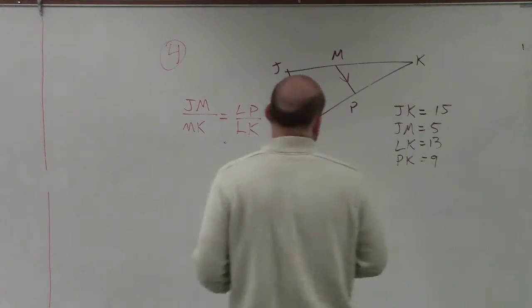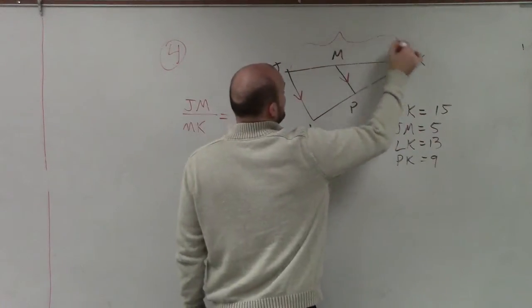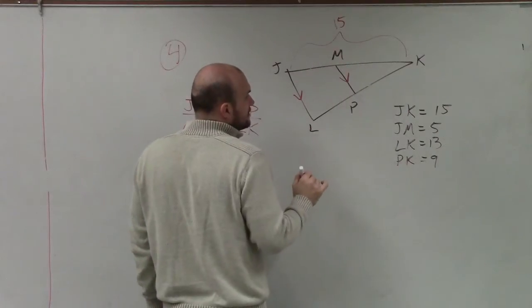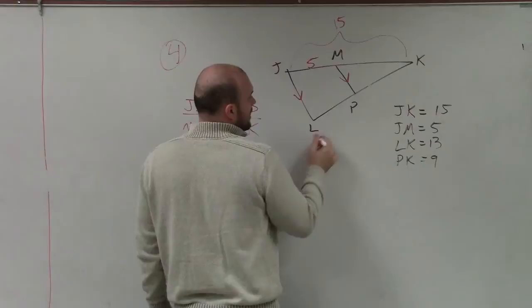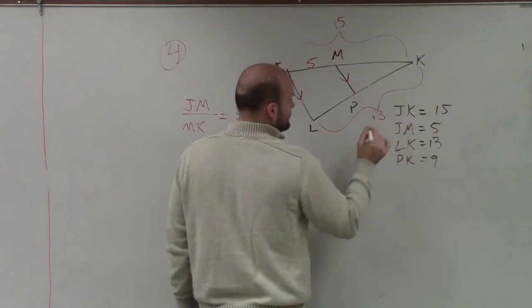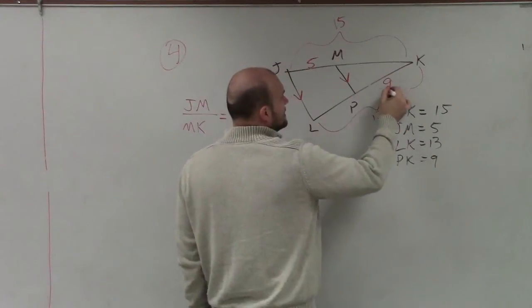So let's go and look at the information we have. They say JK is 15, JM is 5, LK is 13, and PK is 9.